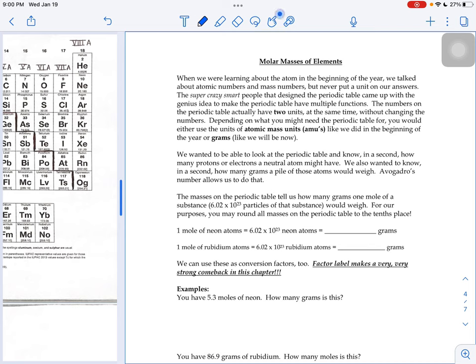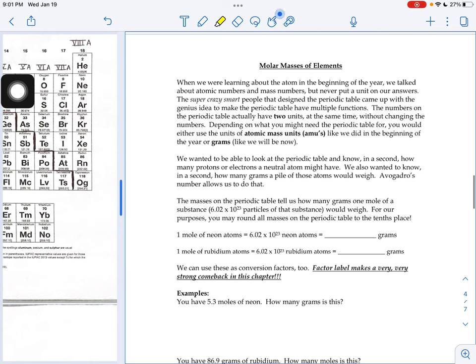We've talked about how that periodic table has been designed so that the mass is, for example, helium's mass of 4.0026. The units that can go along with that number could be atomic mass units, or it could be grams.